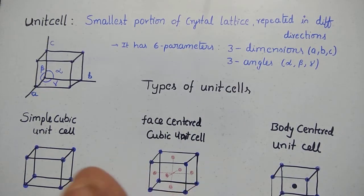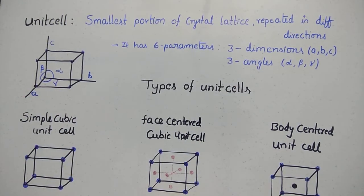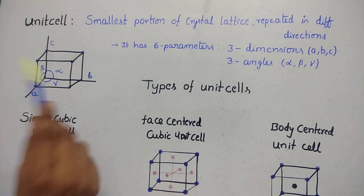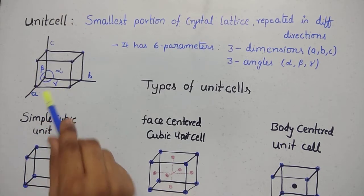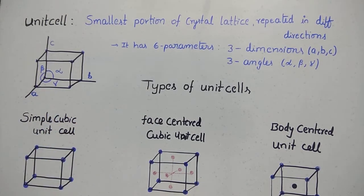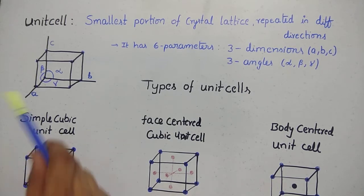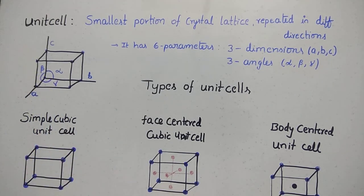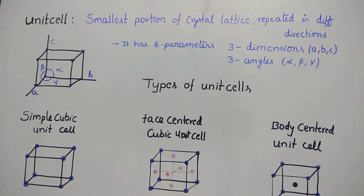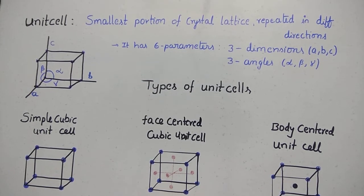If you have a cube in a small square, you can explain the unit cell. The smallest portion of the crystal lattice is repeated in different directions. If you know the unit cell structure, you can define the total crystal structure. In order to know the structure, you have to know the type of unit cell present in that particular crystal. Let us know the types of unit cell.